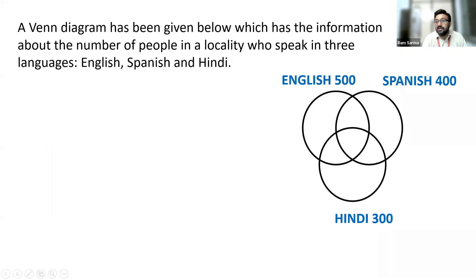Now let us look at the next one. You are given information about three languages, English, Spanish, Hindi. There are 500 members who speak English, 400 speak Spanish, 300 can speak Hindi. In addition to this, you are given some more information. 330 members like only English, 70 members like only English and Spanish, 220 like only Spanish, 60 like all the three.